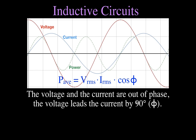For inductive circuits, the voltage leads the current by 90 degrees — that's the phase angle. So we take the cosine of 90 degrees. The cosine of 90 degrees is zero. That means when we calculate the average power, we multiply the voltage times the current times zero, which gives us zero. The average power in an inductive circuit is zero watts — that circuit consumes no power.